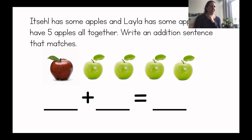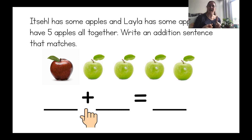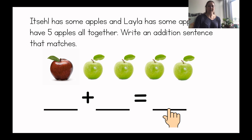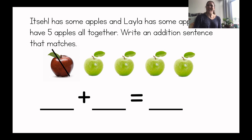So what do we need to do first? We'll have to count how many apples Itzel has. And then what is that symbol? Plus — we'll have to figure out how many apples Layla has that we're adding. So we're going to add the green apples, the ones that Layla has. And then we'll figure out what that equals. How many are there all together? And then we'll write that number. So let's get started. We're going to count the apples that Itzel has — those are the red ones. Count with me. One. Itzel only has one apple. So what number will we write? We'll write a one. One apple for Itzel.